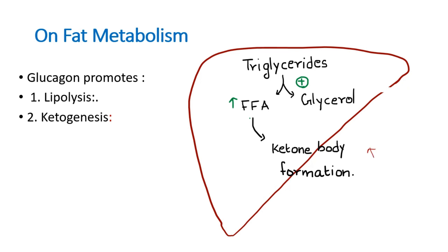There is also an enzyme called malonyl-CoA, which inhibits the conversion of free fatty acids into ketone bodies. What glucagon does is decrease the level of malonyl-CoA, so that there will be even more ketone body formation.